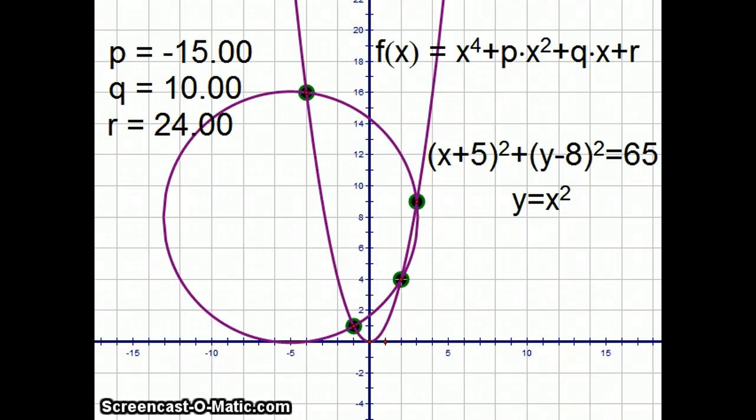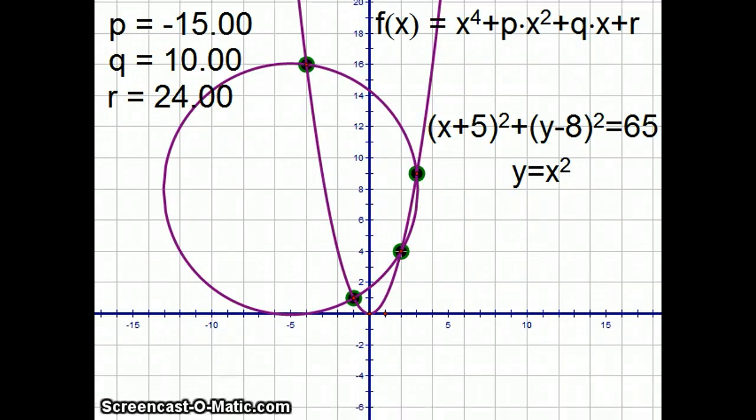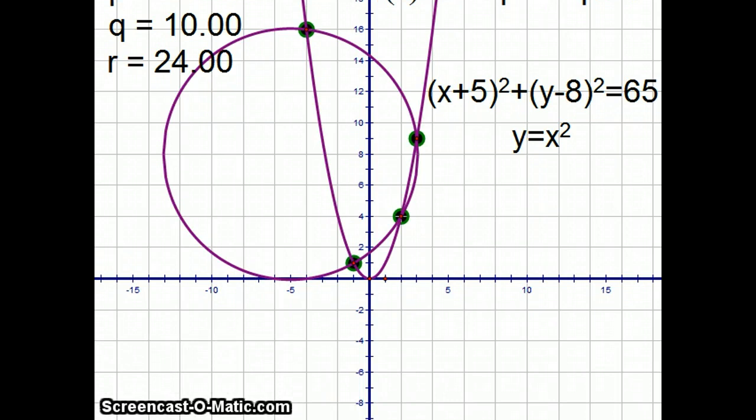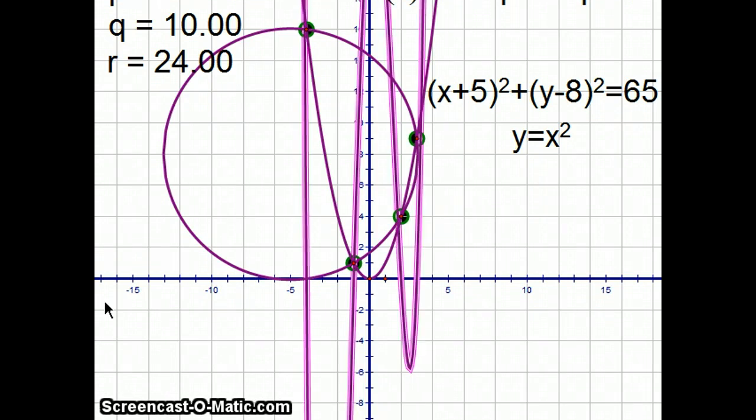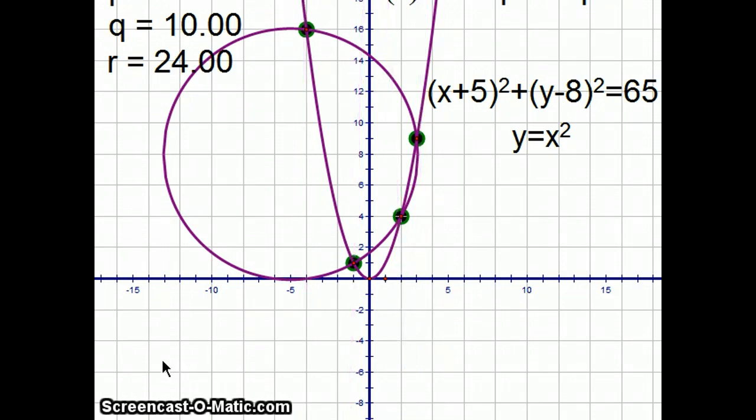Incidentally, if I were to just graph the original equation, it would look like that. And as you can see, these four x-intercepts correspond with the four places where the circle intersects the parabola.